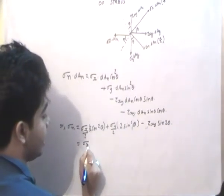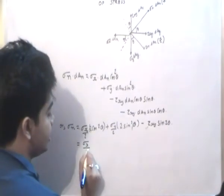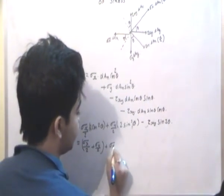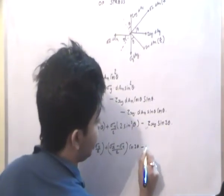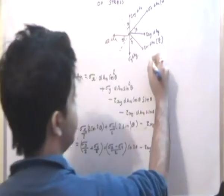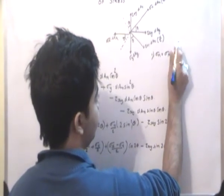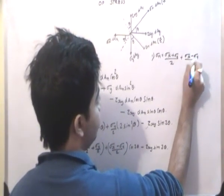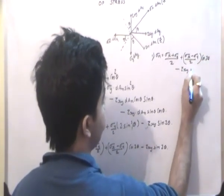Cancelling dAn from both sides, sigma n equals sigma x cos squared theta plus sigma y sin squared theta minus 2 tau xy sin theta cos theta, which equals sigma x times (1 + cos 2θ)/2 plus sigma y times (1 − cos 2θ)/2 minus tau xy sin 2θ. This simplifies to: sigma n = (sigma x + sigma y)/2 + (sigma x − sigma y)/2 · cos 2θ − tau xy · sin 2θ. This is the first equation obtained from this free body diagram.